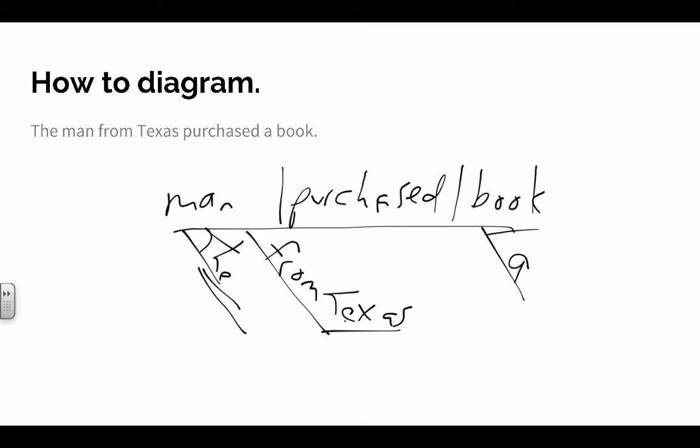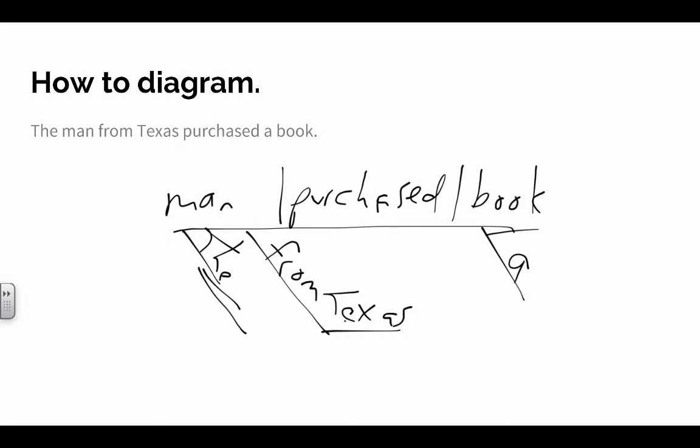Now, how do we diagram them? Well, kind of like adjectives, the preposition becomes a diagonal line underneath the noun. Right now, the examples I'm going to give you today are only where prepositional phrases are modifying nouns.